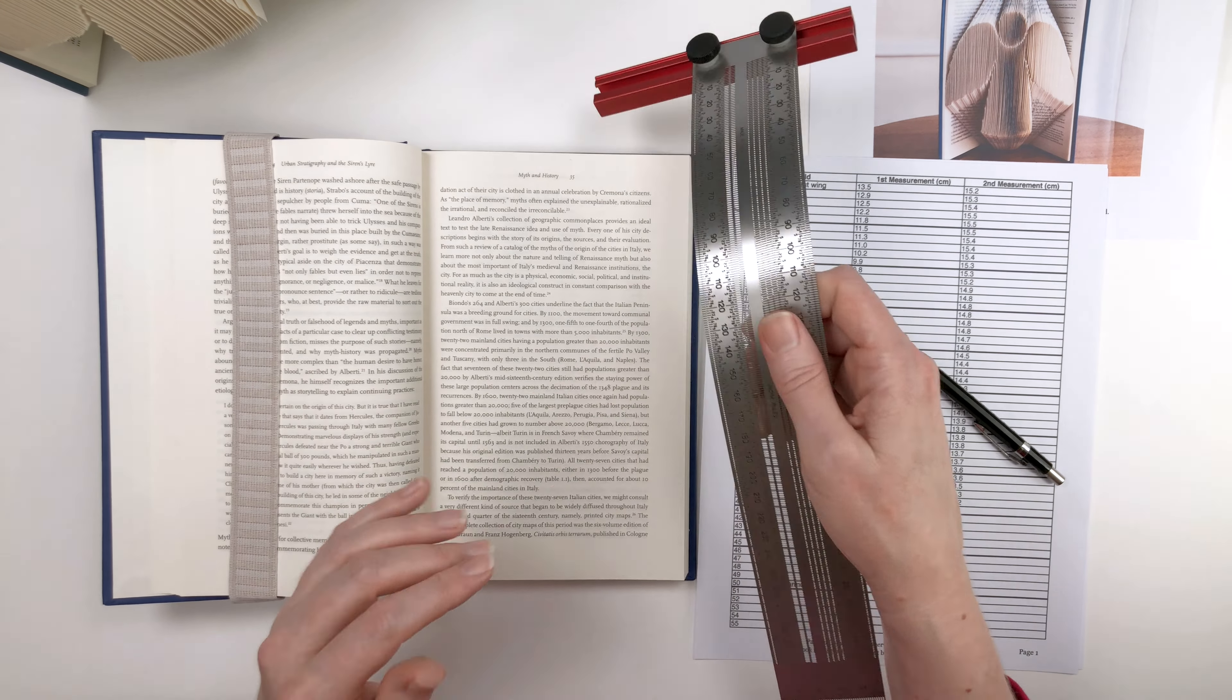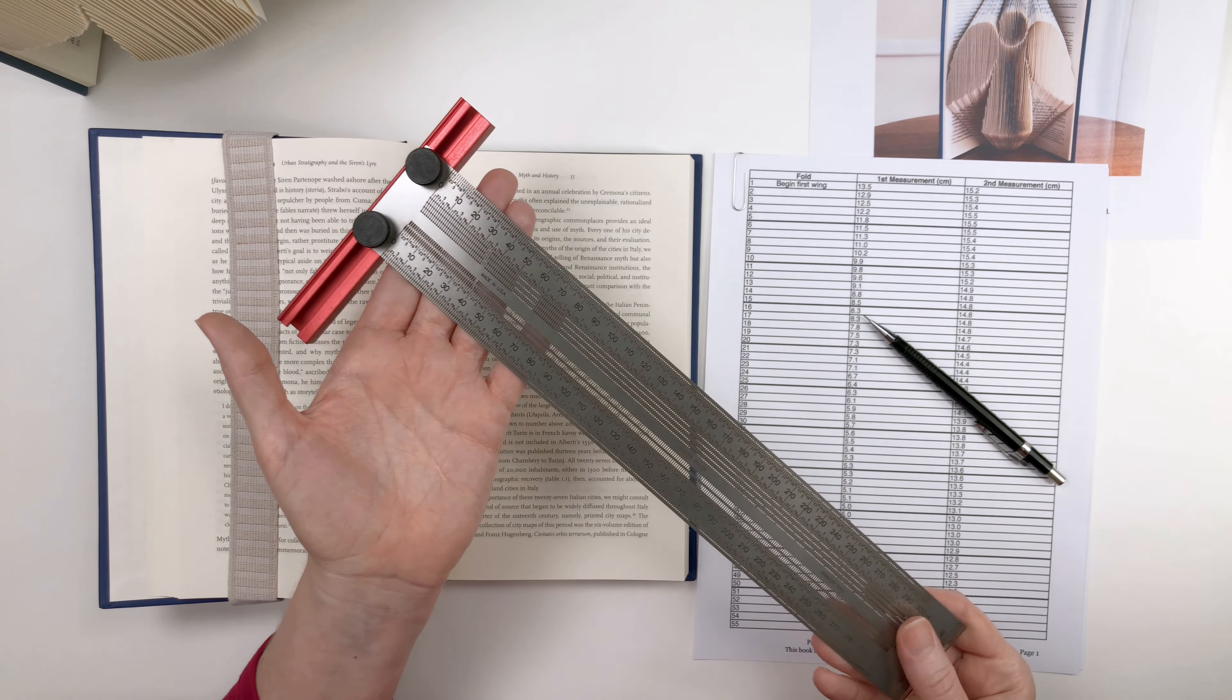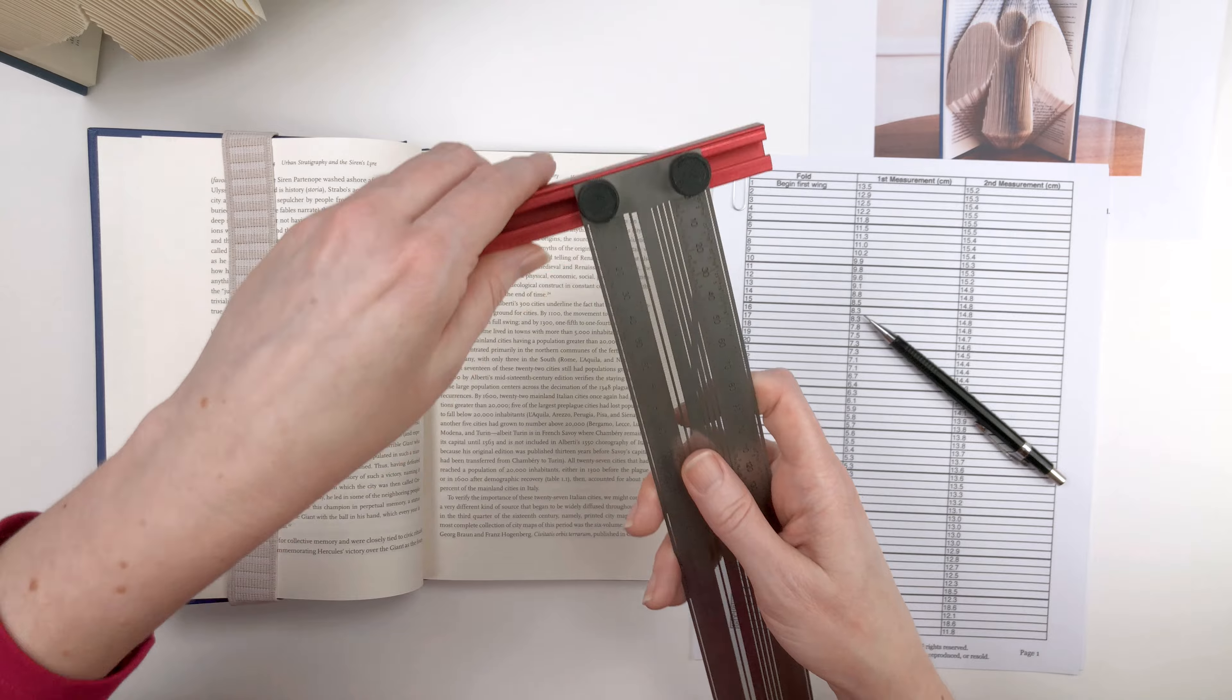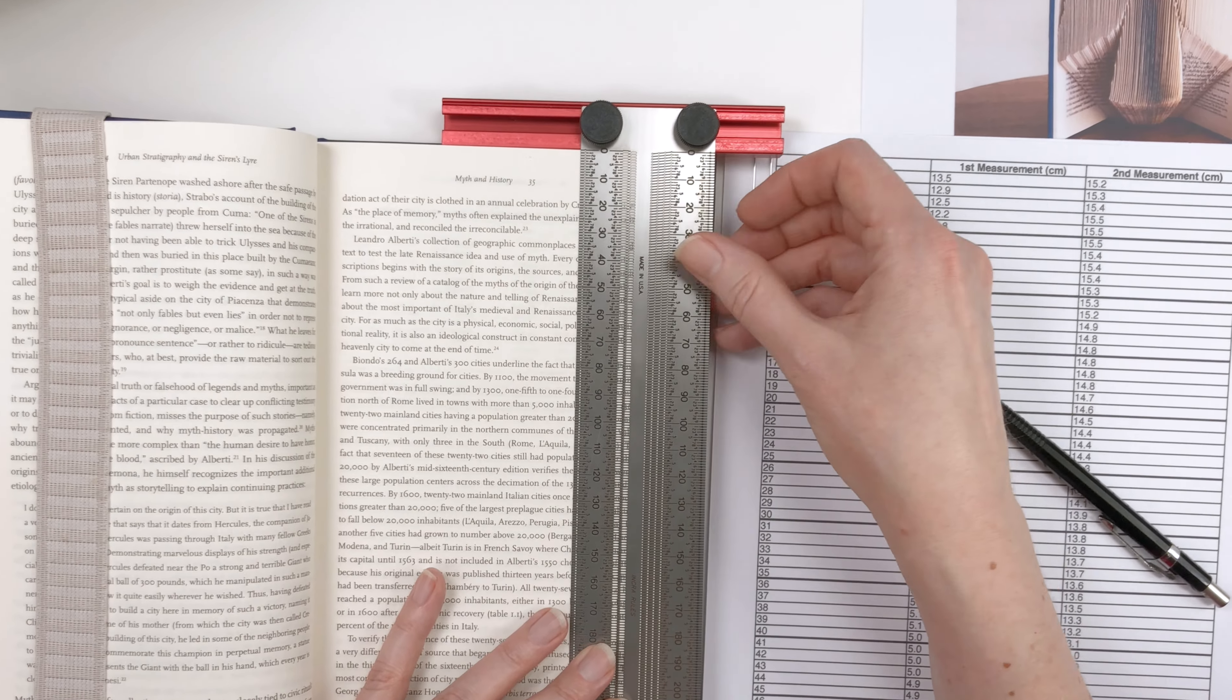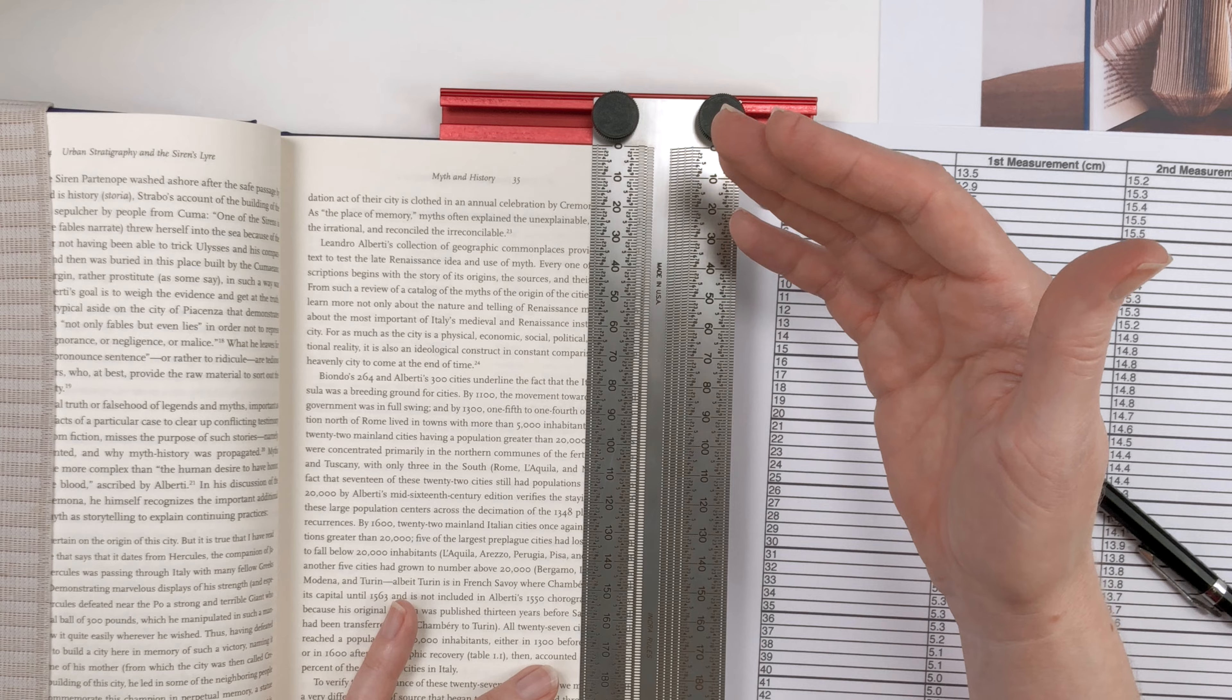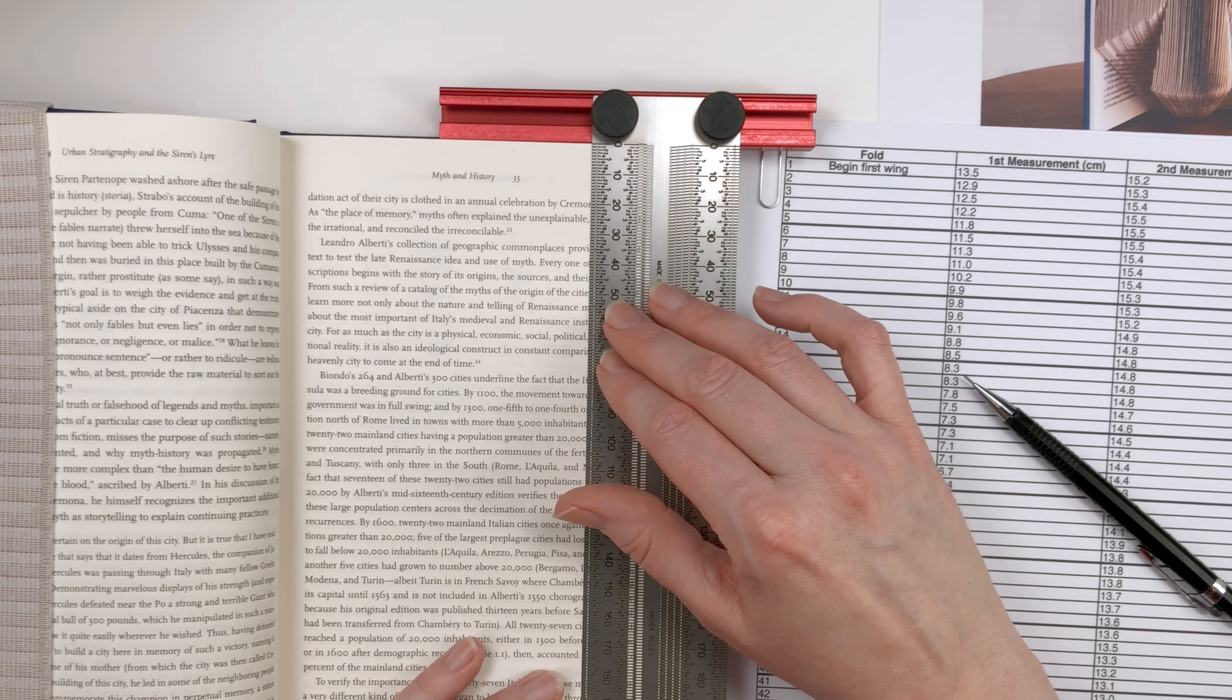For measuring and marking, I'm going to use my Incra Precision T-Ruler. And I've used this ruler for years for book folding, and I just love it. The best thing about it is this red metal T-bar at the top. And what that does is it keeps the zero at the top of the ruler at the same point on every page that you're marking. So that just keeps your lines straight and makes your folds look nice and professional. And I'll put a link to this ruler down in the description.